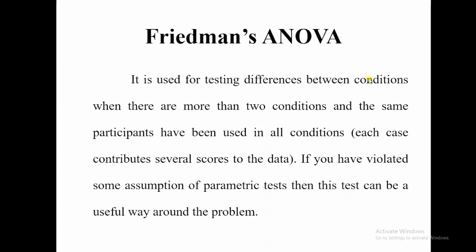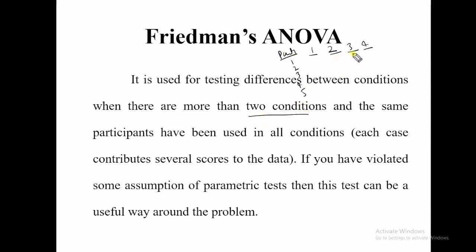Friedman ANOVA is used for testing differences between conditions when there are more than two conditions — for example, after one week, after two weeks, more than two conditions — conditions may be three, four, or five, but it should be more than two. The same participants have been used in all the conditions. If you have violated some assumptions of the parametric test, then this test can be a useful way around the problem. We do not need to check whether my data is parametric or not — it does not matter in the case of Friedman ANOVA.